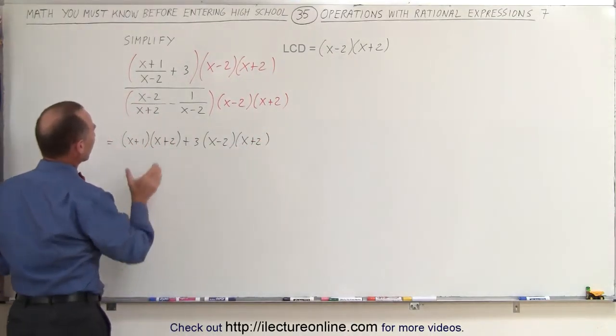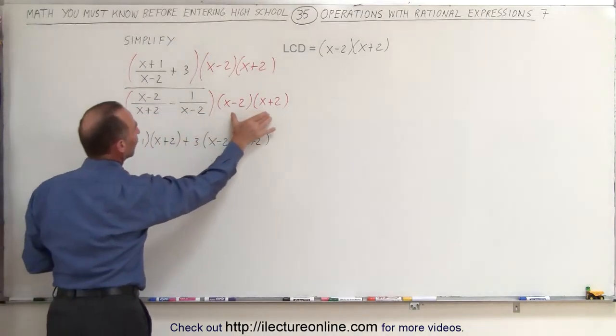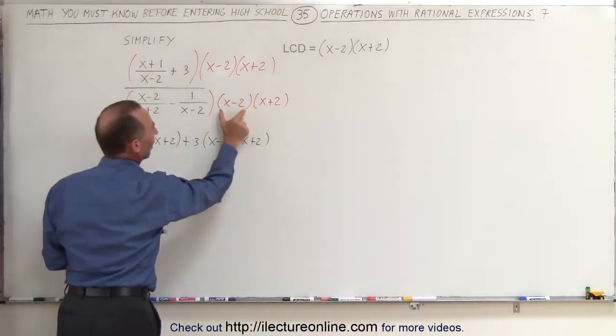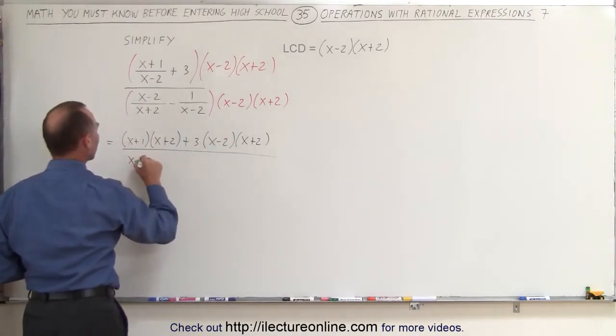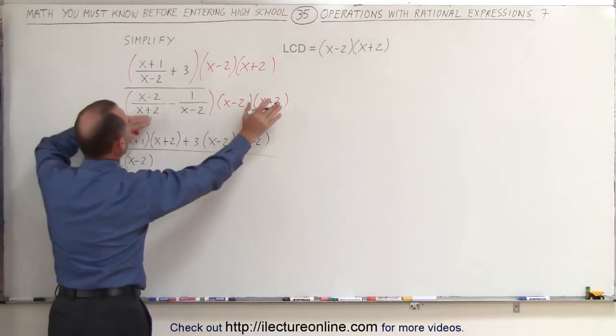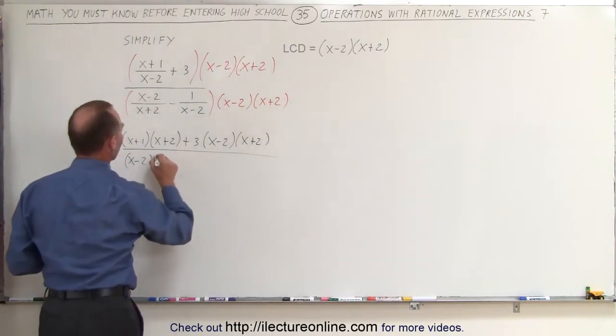In the denominator, notice when we multiply this fraction times this, the x plus 2 cancels out and I'm left with the x minus 2. So the denominator becomes x minus 2 times what's remaining, which is in this case the x minus 2.